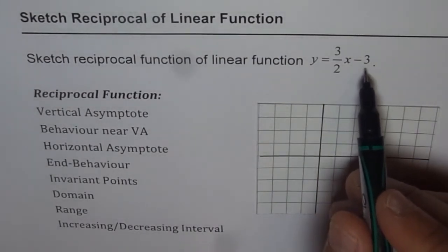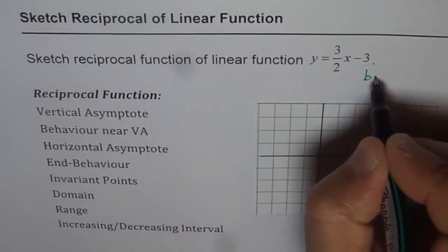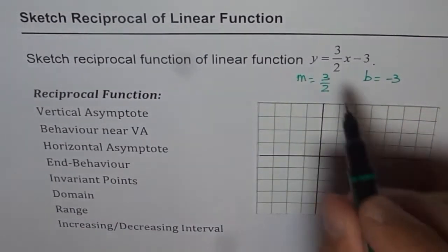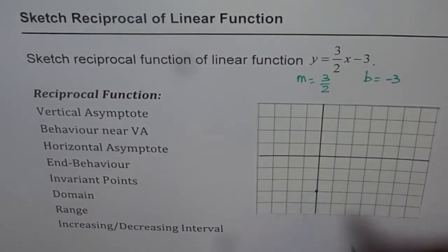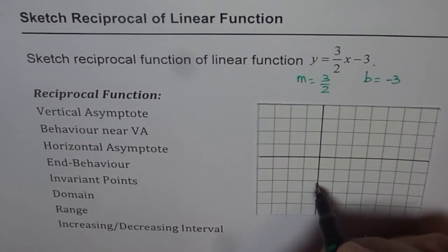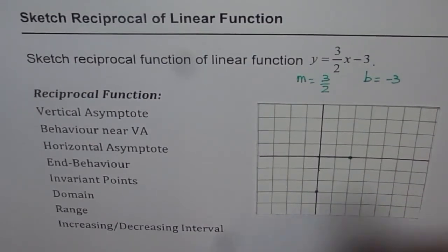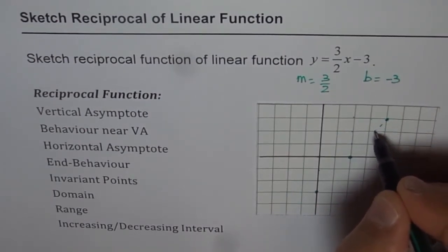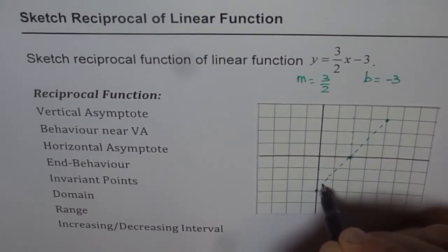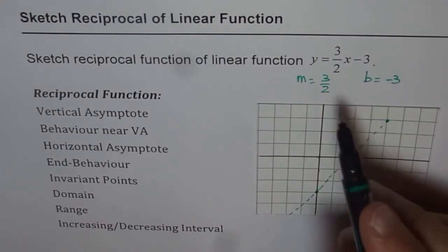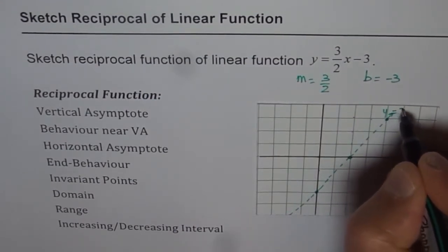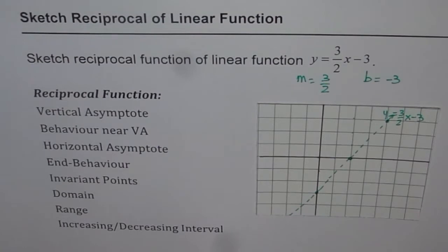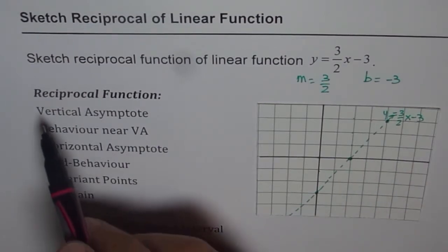The y-intercept is minus 3, so let's call that b. The y-intercept is minus 3 and the slope is 3 over 2. With that we can sketch the line — starting at minus 3, going up 3 and right 2. That also gives us the x-intercept. So these are the points which represent the line y equals 3 over 2x minus 3.